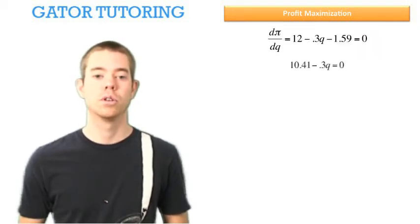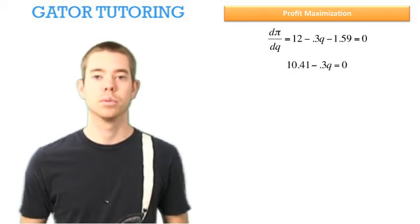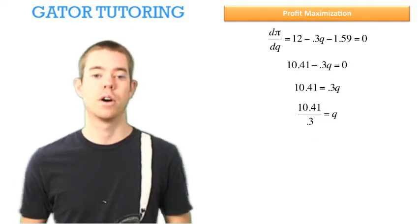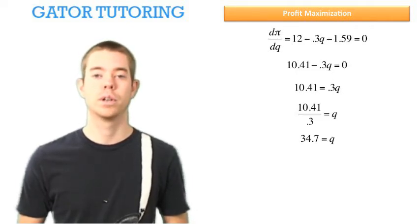So from here, we can do a little algebra. 10.41 minus 0.3Q equals zero. Add 0.3Q to each side, divide through by 0.3, and solve for Q equals 34.7.